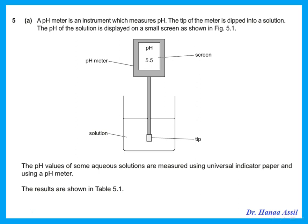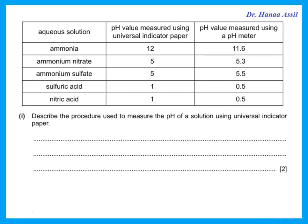A pH meter is an instrument which measures pH — the tip is dipped into a solution and the pH is displayed on a small screen. The pH values of some aqueous solutions are also measured using universal indicator paper. The pH meter is more accurate: instead of saying 12, it gives 11.6; instead of 5, it gives 5.3 or 5.5, giving values to one decimal place.